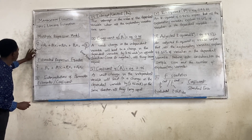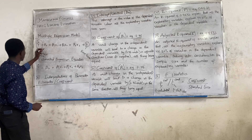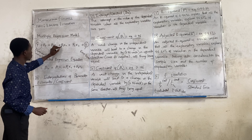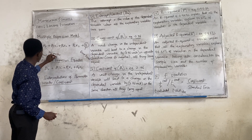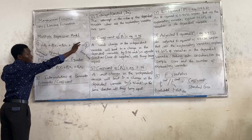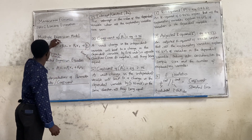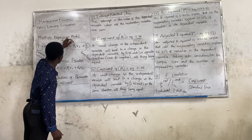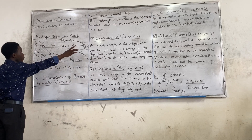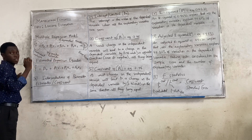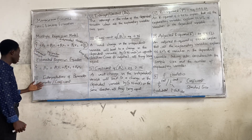Y₀ is your dependent variable. β₀, b₁, b₂, b₃ are your parameter estimates. All the variables on the right side — x₁, x₂, x₃ — are your independent variables. So you are going to interpret β₀, β₁, β₂, and β₃. This is interpretation of parameter estimates or coefficients.